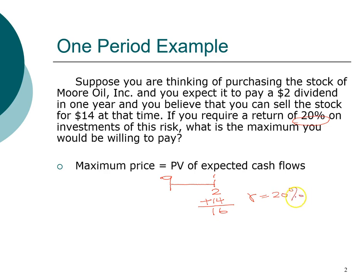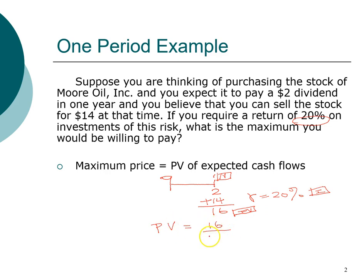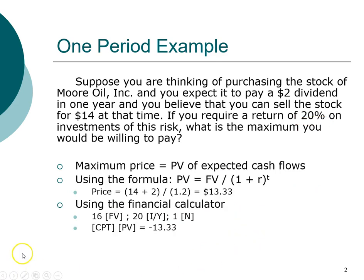The required return is twenty percent, so our discount rate is twenty percent. The sixteen dollars is the future value at the end of year one. We discount the sixteen dollars back at twenty percent for one year using either the formula or a financial calculator. The price of the stock today — at year zero — is thirteen dollars and thirty-three cents.